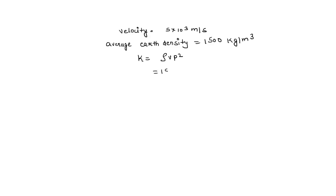The ρ is 1500 into 5 multiplied 10 to the power 3 whole square. So multiplying these, 1500 multiply 25 into 10 to the power 6.